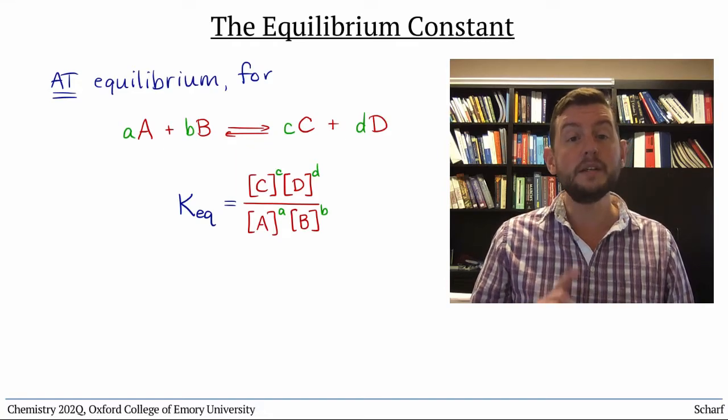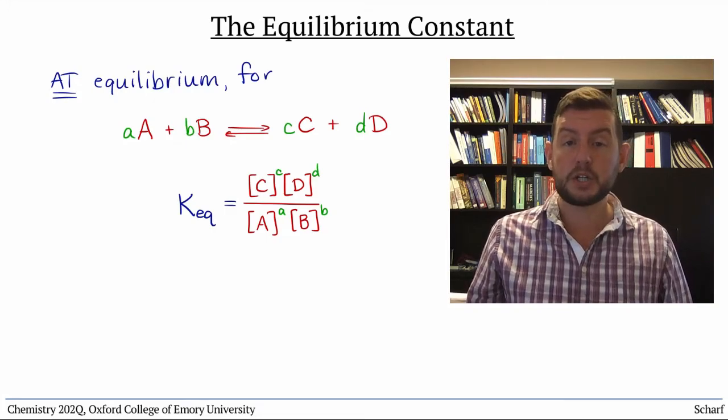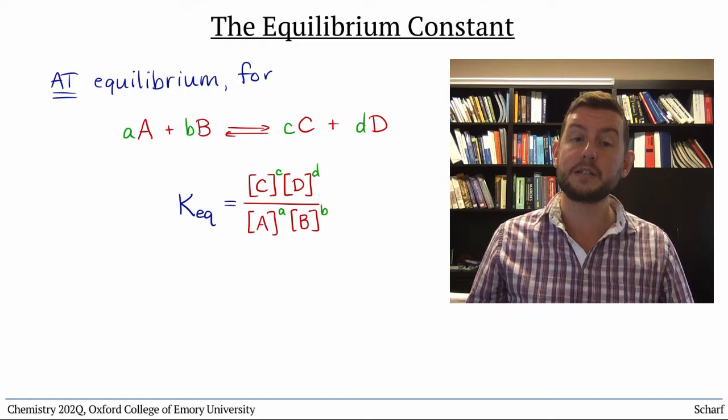There's one important convention here. When writing an equilibrium expression, we only include reactants and products that are either gases or dissolved substances, that is, solutes. We exclude pure solids and pure liquids. We do this because the concentrations, that is, the number of moles per liter, of these sorts of substances don't change during a chemical reaction.